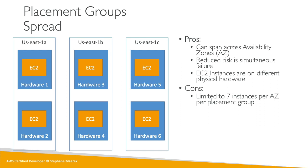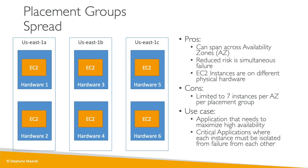There is a limit to how big your placement group can be, so you need an application of good size but not too large. The use case would be an application that needs to maximize high availability and reduce risk — in general for critical applications where instance failures must be isolated from one another. Remember there is a limitation of seven instances per AZ per placement group.